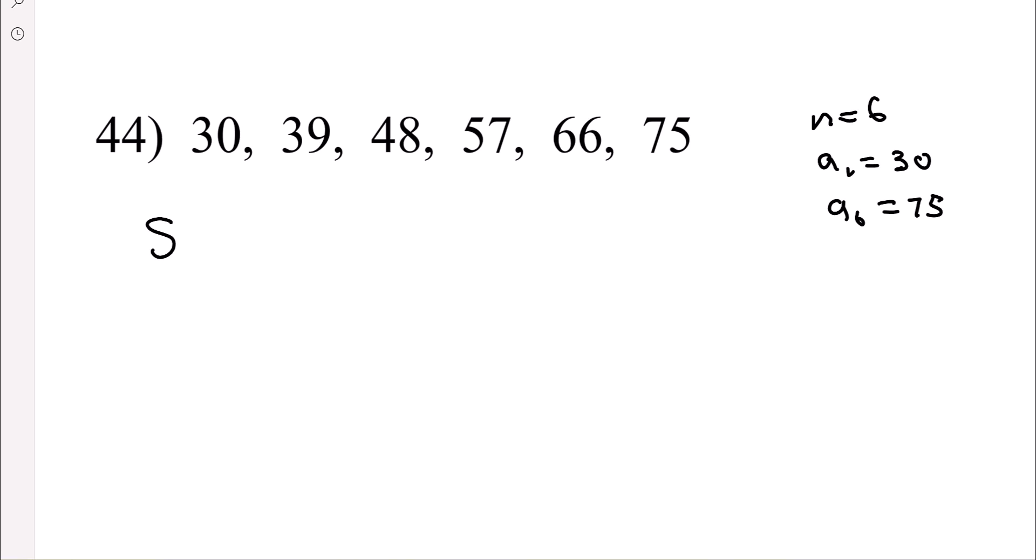So the series of six terms, n is 6. So again, 6 divide 2, and we're multiplying 30 plus 75.